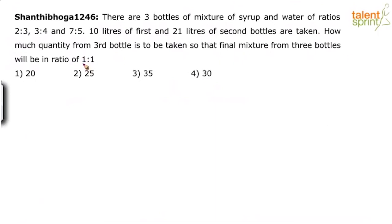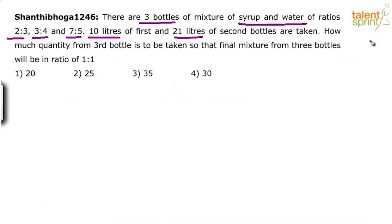So basically he is talking about three bottles — three bottles of mixtures of syrup and water — and the ratios in these three bottles are 2:3, 3:4, and 7:5. We have taken 10 liters from the first bottle and 21 liters from the second bottle. The question is: what quantity should be taken from the third bottle so that the final mixture of these three bottles will be in the ratio of 1:1?